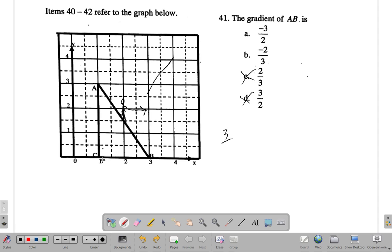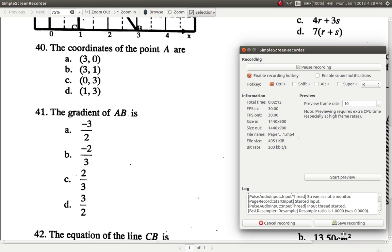It runs from one to three, so it covers two units. So it's three over two, and it's negative. So the answer is A. All right, so question 41, the answer is A.